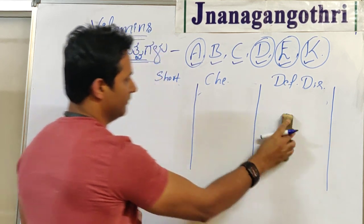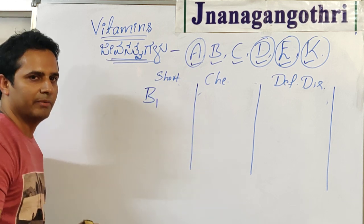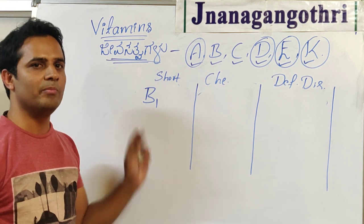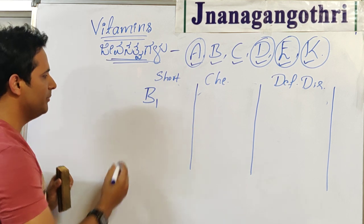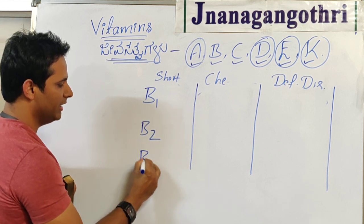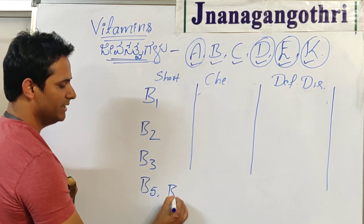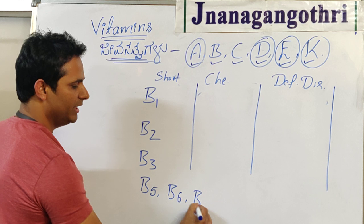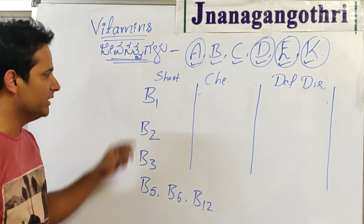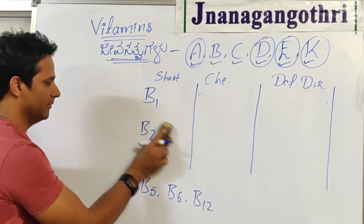Now, how to remember vitamin B? Vitamin B is not just one vitamin — it is called the B complex. There is B1, B2, B3, B5, B6, and B12. We need to know the chemical name and deficiency disorder of all these B vitamins.